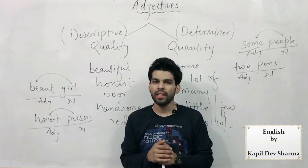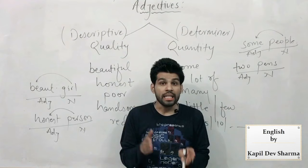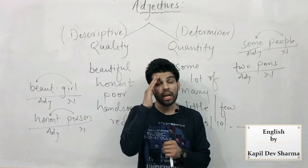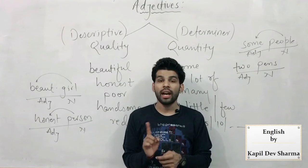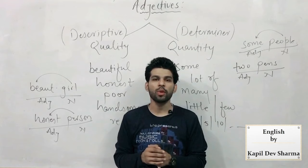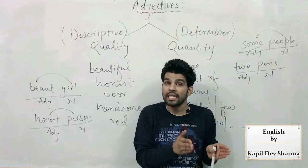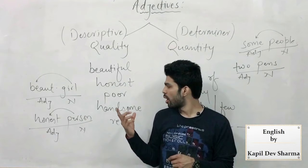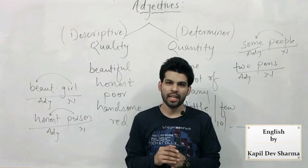जब किसी को अच्छी खासी salary मिलती है — handsome salary कहा जाता है। Package के साथ handsome लिखा जाता है — अगर किसी का 7.5 lakh का package है तो उसे handsome package कहा जाएगा। यहाँ 'अच्छे खासे पैसे' में 'अच्छा' quality नहीं बल्कि quantity दिखा पा रहा है — और उसे English में 'handsome' कहा जाता है।